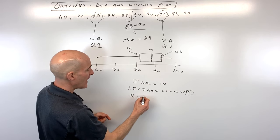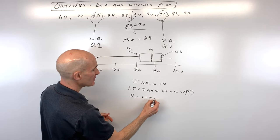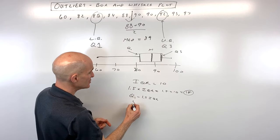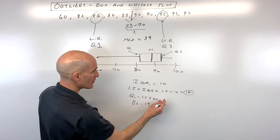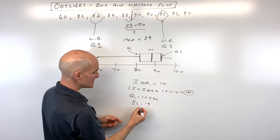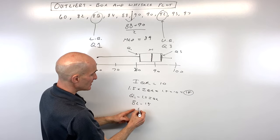Then if we take our Q1, so Q1 minus 1.5, the interquartile range. So in this case, Q1 is 82 minus our interquartile range times 1.5, which is 15. That comes out to 67.